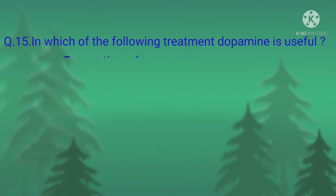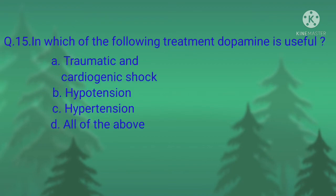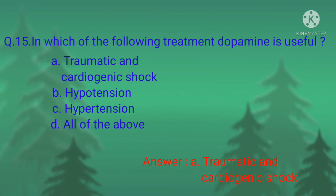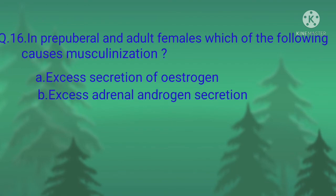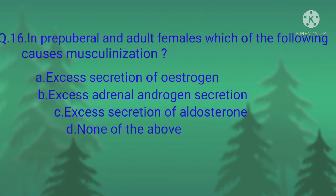Question number fifteen: in which of the following treatments is dopamine useful? Option A, traumatic and cardiogenic shock; option B, hypotension; option C, hypertension; option D, all of the above. The correct option is option A, traumatic and cardiogenic shock.